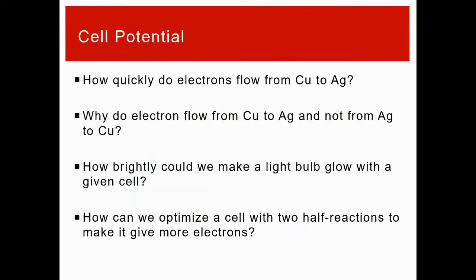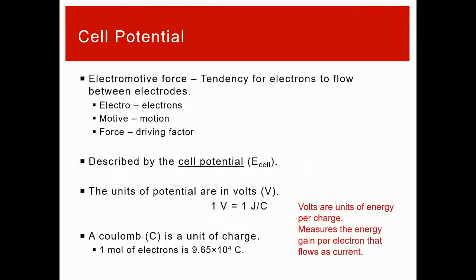We've defined all the parts of a cell and everything that goes into it. Now we want to start to talk about fancier applications of cells or how we can think about and use cells. One of the questions we could ask is, how quickly do these electrons move? Why do the electrons flow from one metal to the other? We looked at a copper silver example last time. In one case, the copper, when it's paired with zinc, the electrons go to the copper. When copper is paired with silver, the electrons flow to the silver. Why are those directions decided? We'll continue on next week talking about questions like how brightly can you make a light bulb glow? How can you make a cell better?